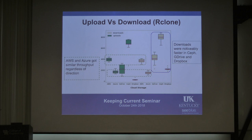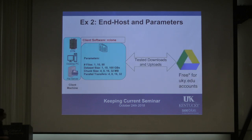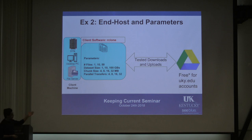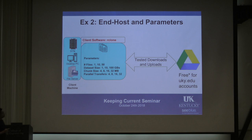Out of all those parameters, Rclone, Google Drive, and AWS were the best performing. Since Google Drive is free for UK students, we decided to run the next experiments on Google Drive. However, there is a caveat: there is a limit of 750 gigabytes per day per account. So we had to wait until the next day to run subsequent sets of experiments.